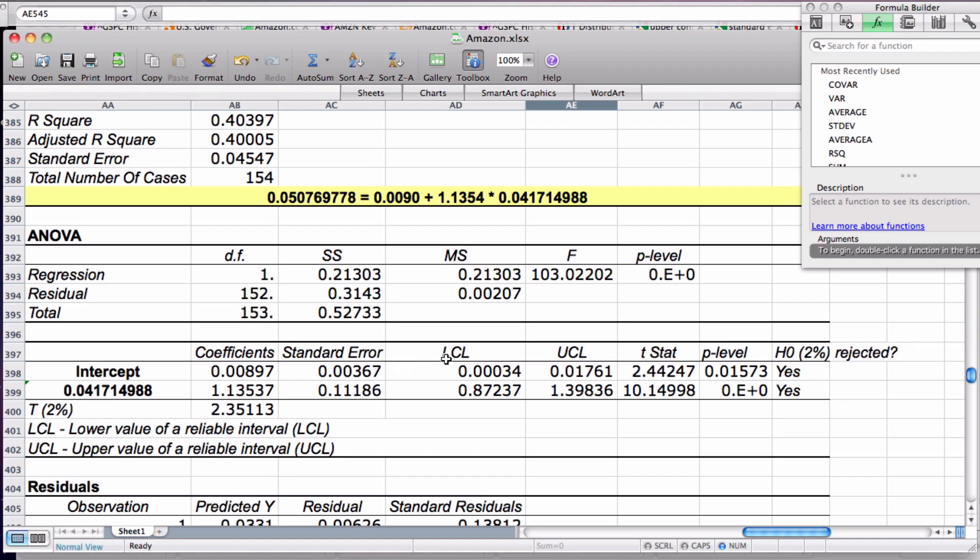Here we have our lower confidence limit and our upper confidence limit. These mean that within this probability level, we can say that the beta or either of these coefficients are within these levels with a 99.99% confidence.